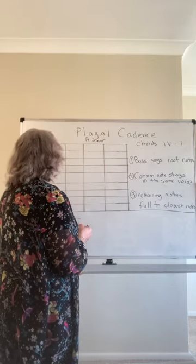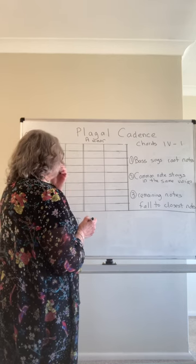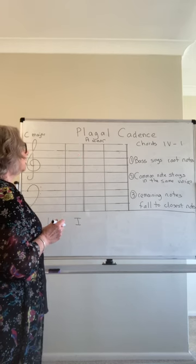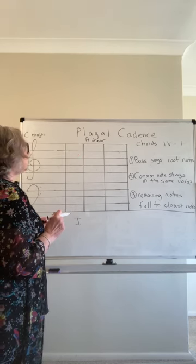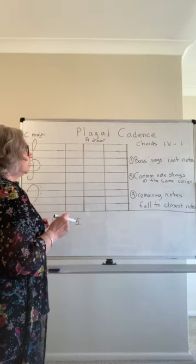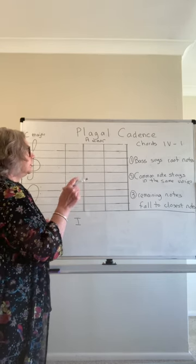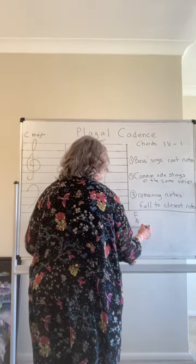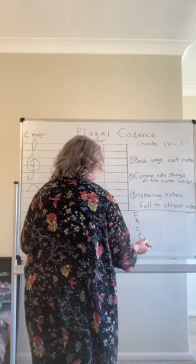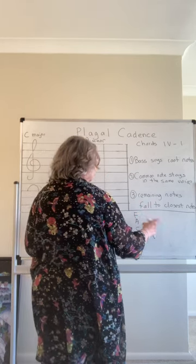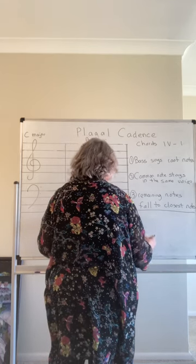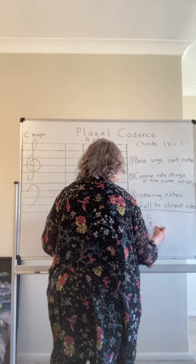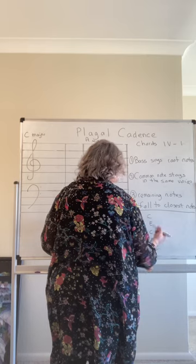Chord four followed by chord one. First we're going to look at the key of C major. The fourth note of C major is F, so we build an F triad, then double the F to get four notes. Then going to chord one — C E G — doubling the root note C.